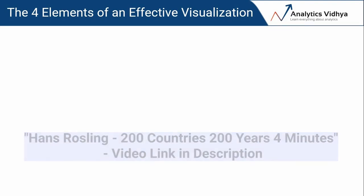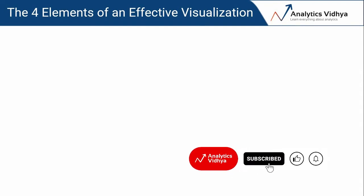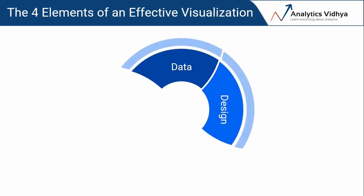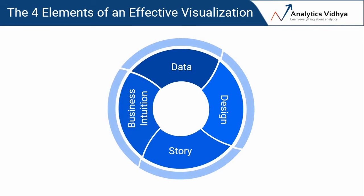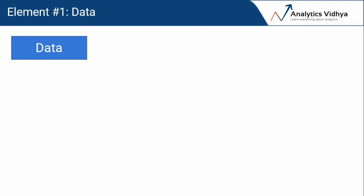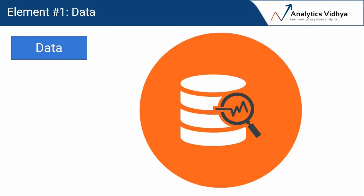The first element — and you might have guessed this already — is of course data. The second element is design, which we can intuitively connect to when we speak of visualizations. The third brings it all together in the form of a story, and the final piece that completes our key element circle is business intuition. Now let's understand all of these in more detail. Without data, we can't prove or disprove any hypothesis and certainly can't analyze anything — so this element involves collecting and storing data, ensuring it is clean and ready for exploration and analysis.